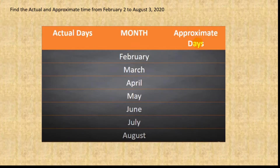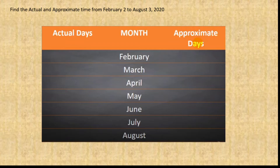Another example: Find the actual and approximate time from February 2 to August 3, 2020. For actual days, take note — we need to determine whether 2020 is a leap year. The year is 2020.